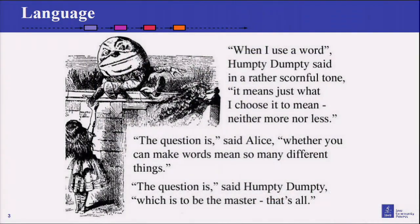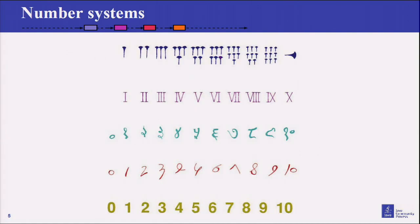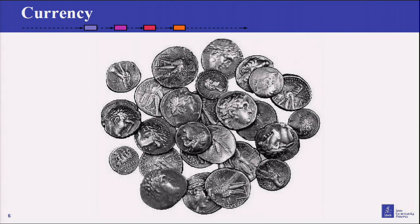So let's start at the very beginning. Probably the very first standard of all was human language. If we all behaved the way Humpty Dumpty did and said words mean anything I want them to mean, then we would not be able to communicate with each other. There would be no such thing as human civilization. After we learned to speak, we learned to write, we learned to create number systems for counting, and we created a medium of exchange — currency. Very important for the development of commerce.